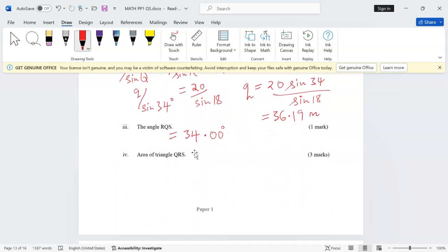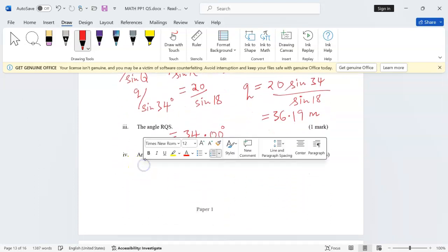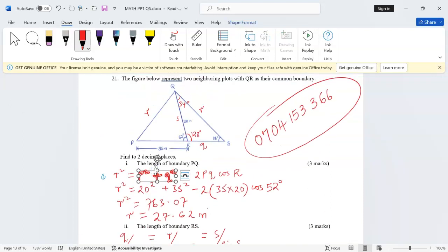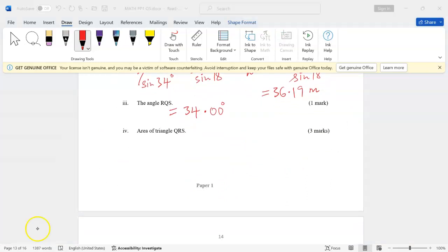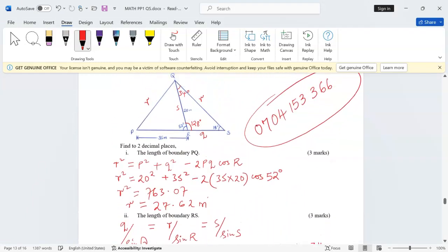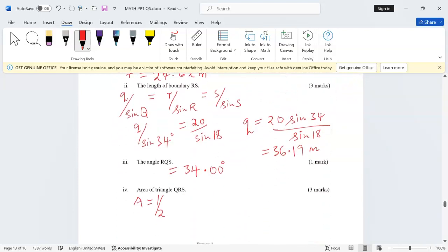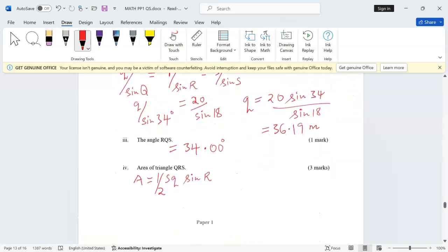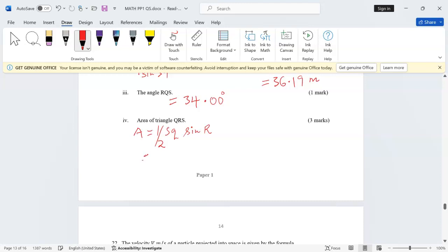Therefore we can follow the formula which says that area of a triangle is half times length s times length q times sine of the angle between them, which is the angle at R. Now we'll be substituting half multiplied by length s which is 20, then length q which has just been calculated, 36.19, then sine of 128.